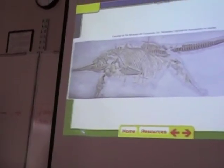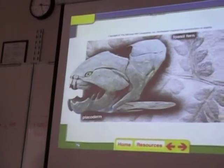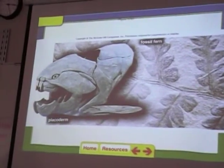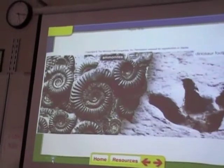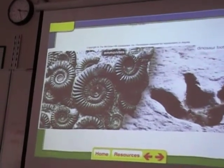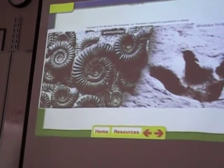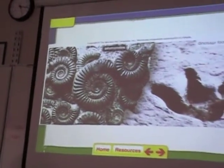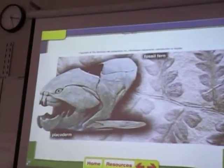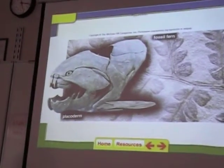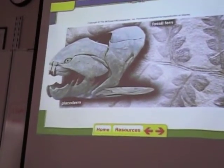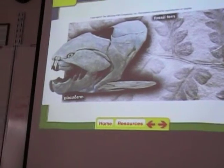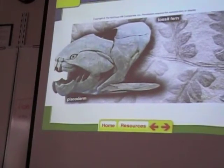There's an ichthyosaur fossil. A placoderm — an ancient armored fish. A fossil fern. Ammonites — an extinct creature that looks kind of like a snail. And there's a dinosaur footprint.